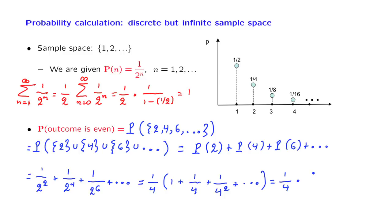And now we have 1 fourth times the infinite sum of a geometric series, which gives us 1 over 1 minus 1 fourth. And after you do the algebra, you obtain a numerical answer which is equal to 1 third.